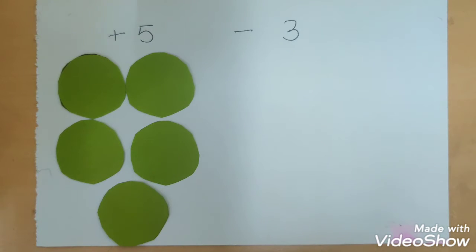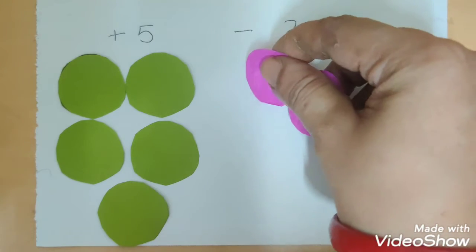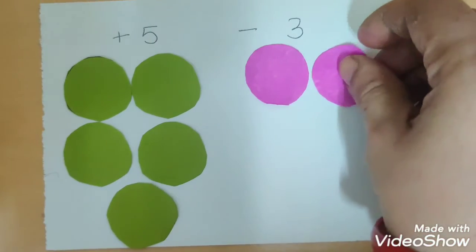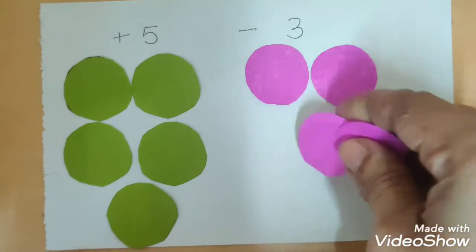So, we have 5 of the circles which are green in color. And here, when I say minus 3, do not worry about the sign. Anything that is with the minus sign prior to a number, just put it as the pink color. So, here I have 1, 2, and 3.